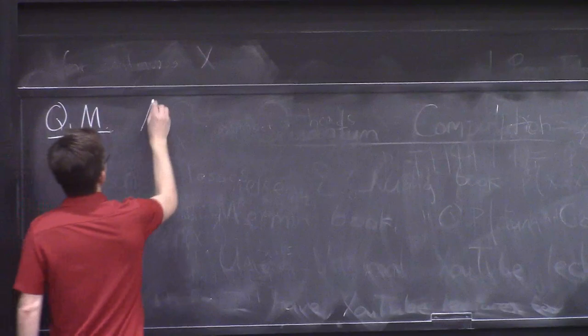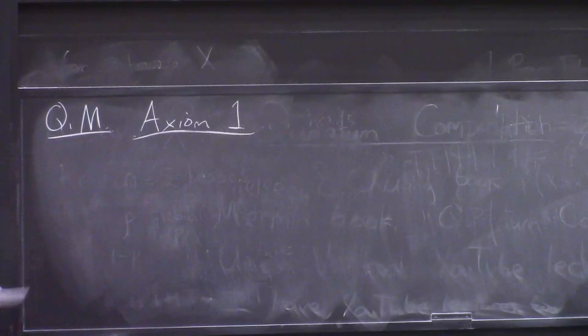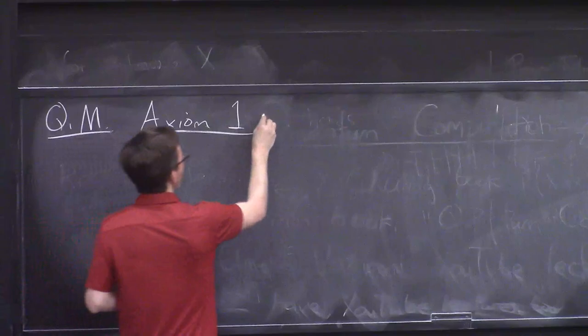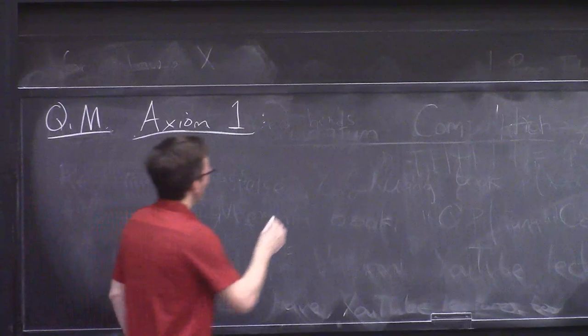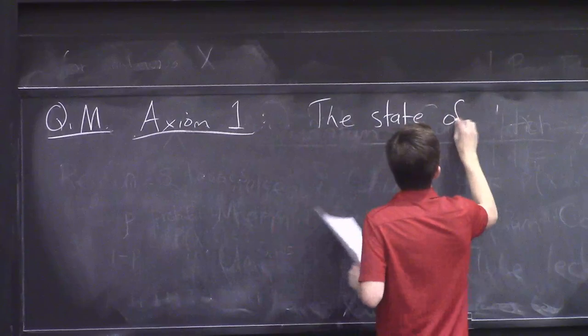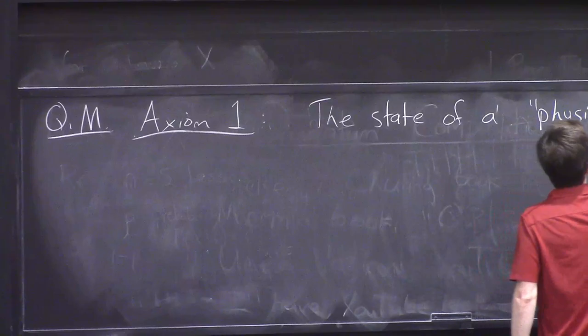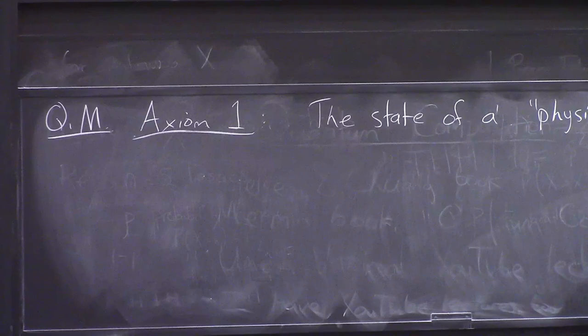These are well-understood laws of physics that have been unimpeachable for a hundred years. So even if they look strange to you, there's nothing to worry about. Axiom one is this: the state of a physical qubit — I'll come back to this term in a second — is a unit vector in two dimensions.